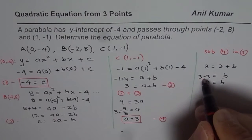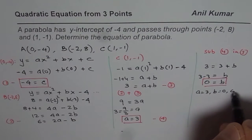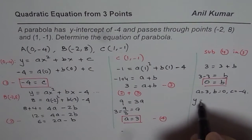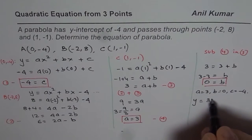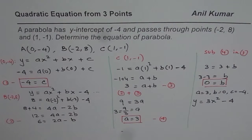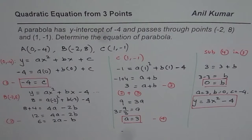We now know all three unknowns: A equals 3, B equals 0, and C equals minus 4. So our equation is y equals 3x squared minus 4. This is the equation of the parabola that passes through the three given points. Remember, you need three different equations to solve for the three unknowns. I hope that helps — thank you and all the best.